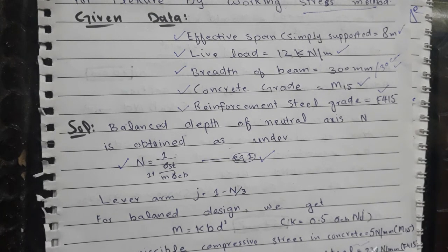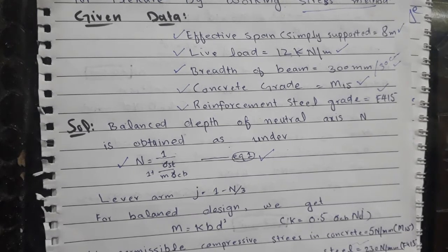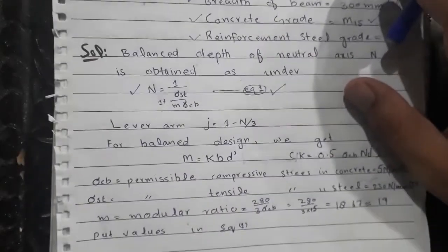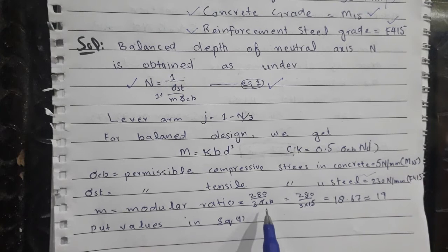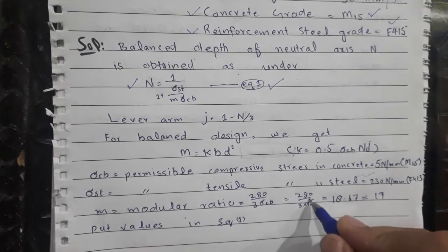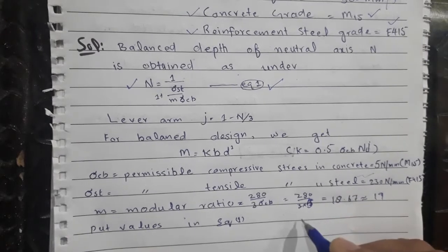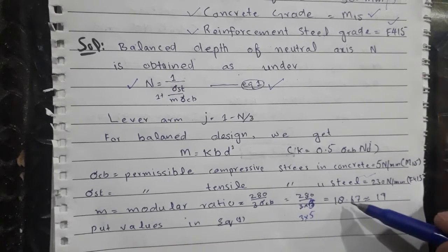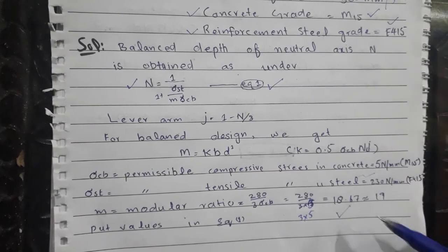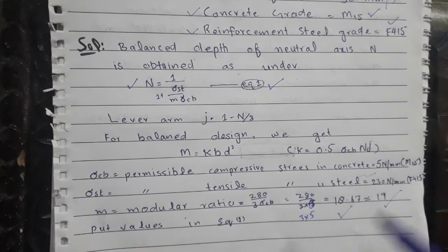Permissible compressive stress in concrete for M15 grade is 5 N/mm². Permissible tensile stress in steel for Fe415 grade is 230 N/mm². The modular ratio m = 280 divided by (3 multiplied by permissible compressive stress in concrete) = 280 divided by (3 × 5), which gives 18.67, approximately 19.